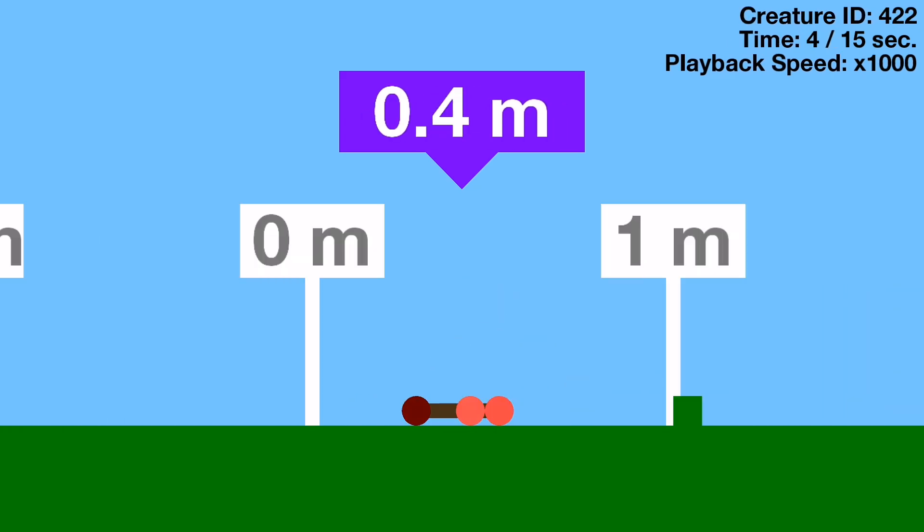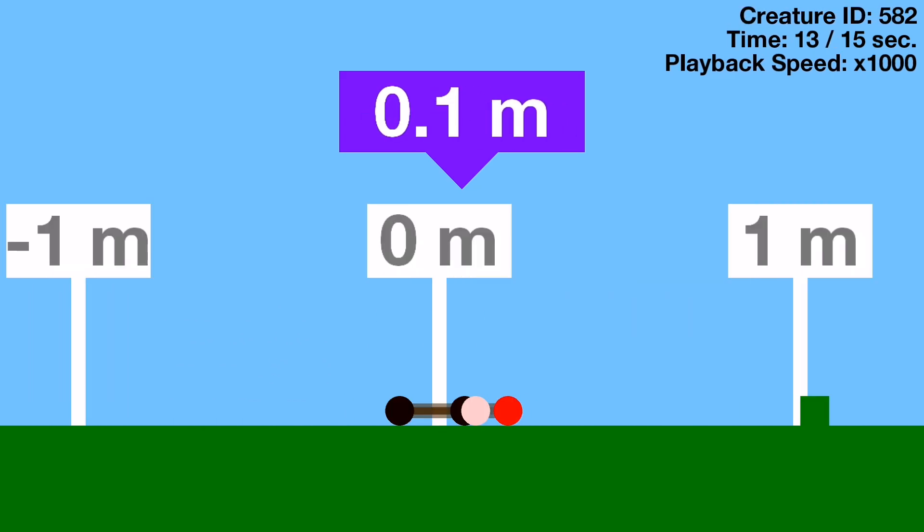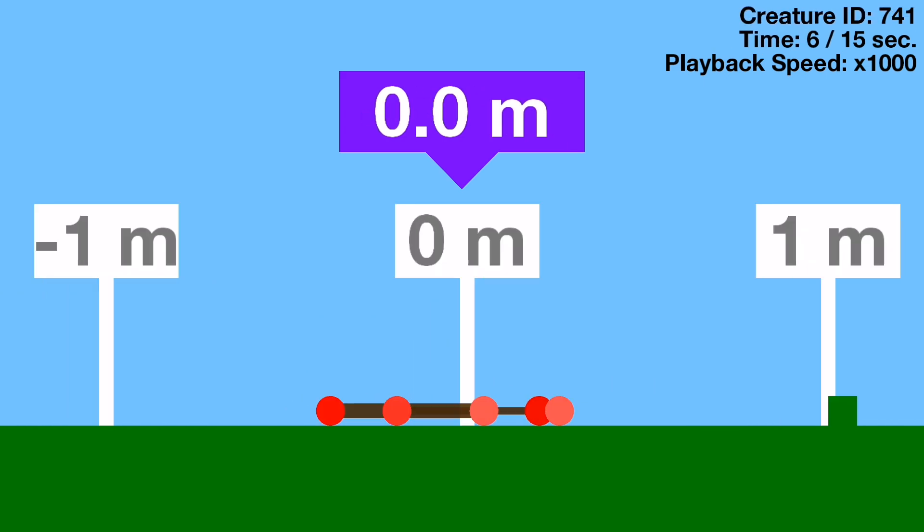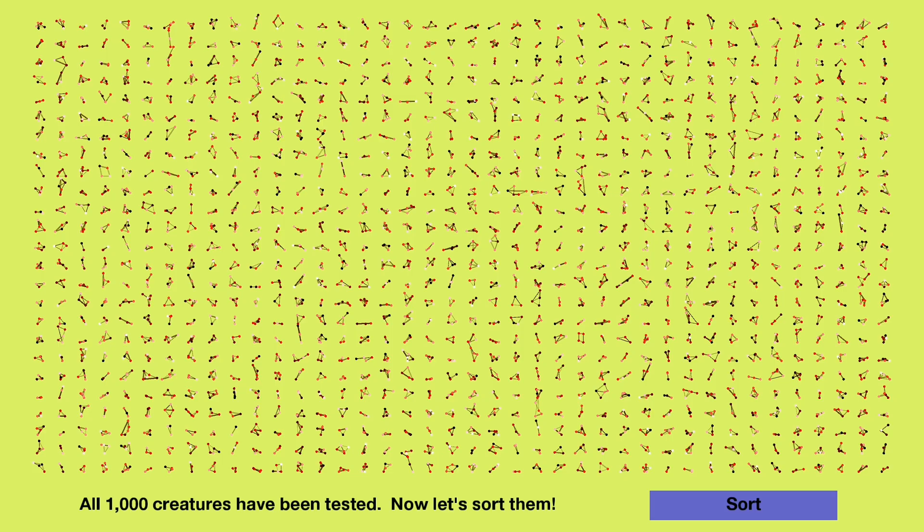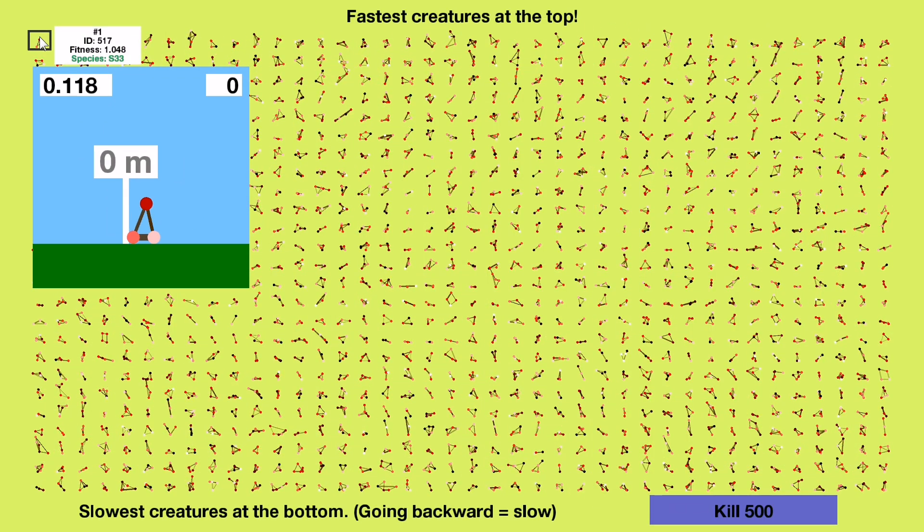Okay, back to the evolution. You can see that from the original set of 1,000 creatures, very few are even making it to the first hurdle, which is pretty pathetic. After sorting, we can see that at least the best creature made it past 1 meter. Let's see how it did it.